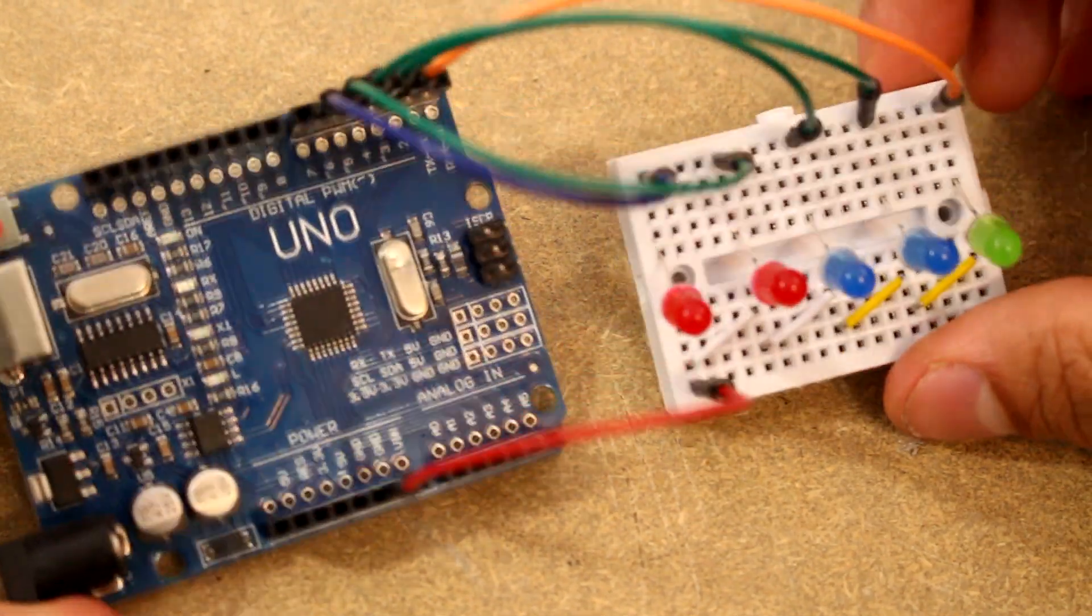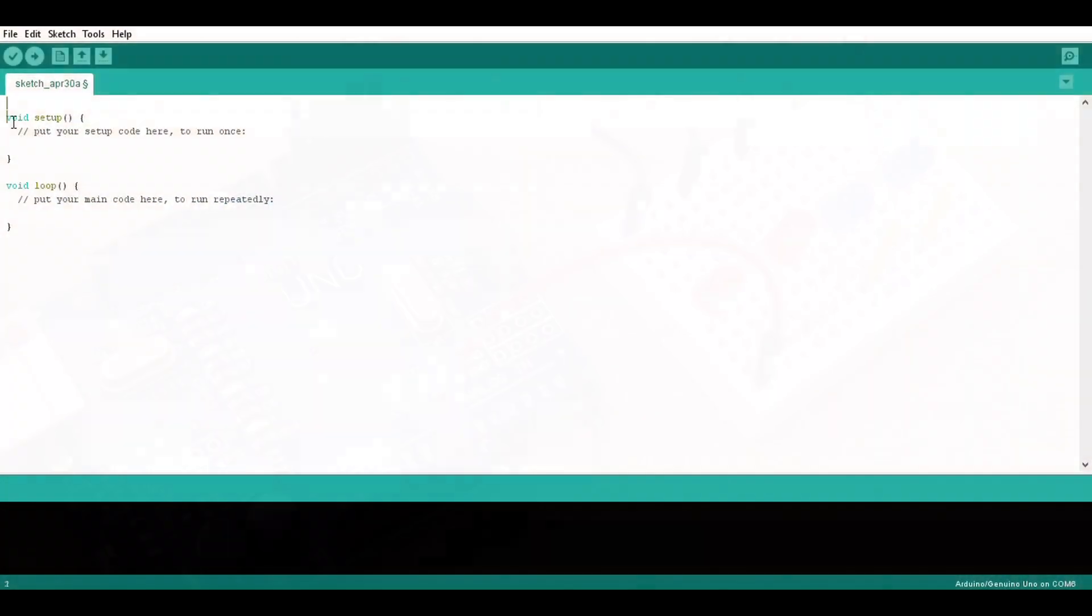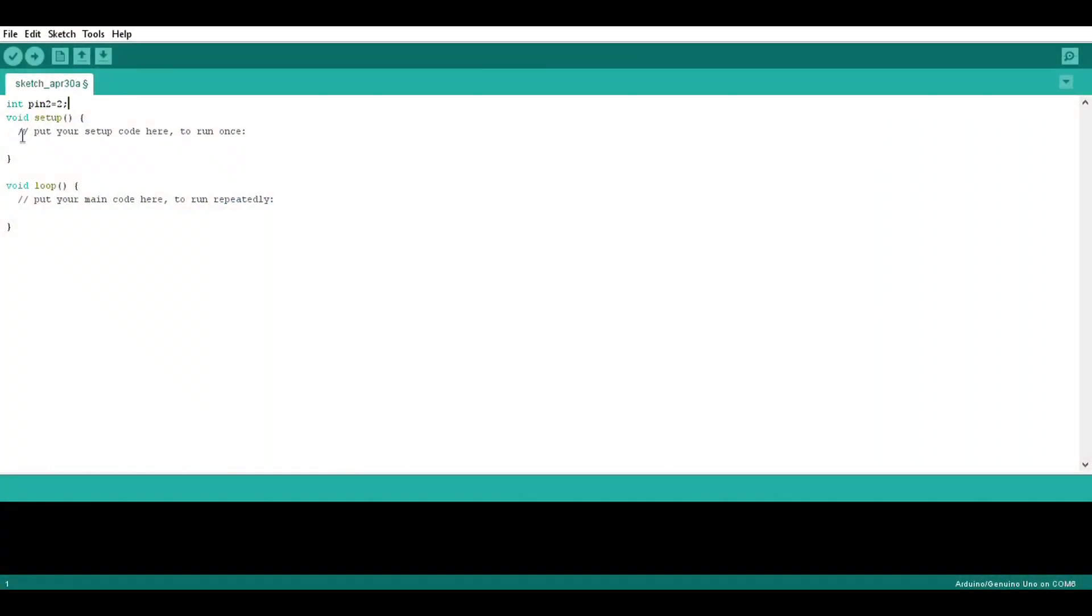Now it's time to code the Arduino. For the coding I will leave a link in the description where you can copy all the code. But basically I start off by declaring the pin that I'm going to use and then I'm going to declare it as an output.